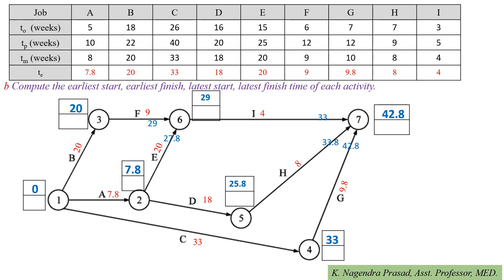Next, we determine the latest start time and latest finish time by the backward pass method. We begin from the last event, that is event 7. The earliest finish time becomes the latest finish time. So latest finish time at event 7 is 42.8. For activity I, latest finish time = 42.8 and latest start time = 42.8 − 4 = 38.8.